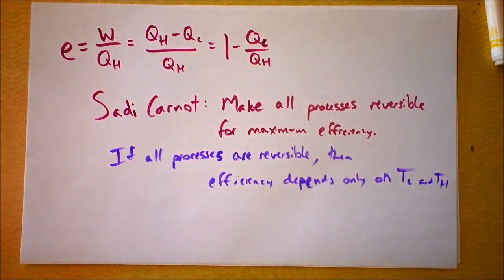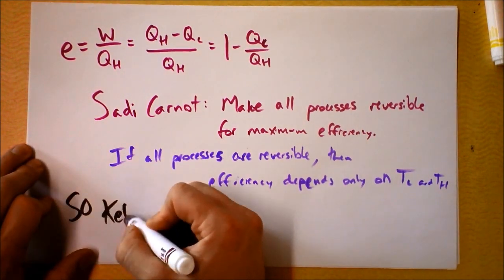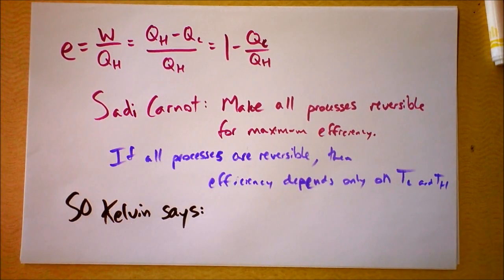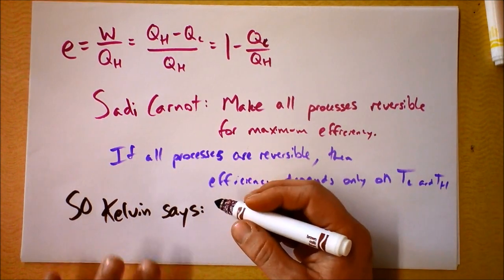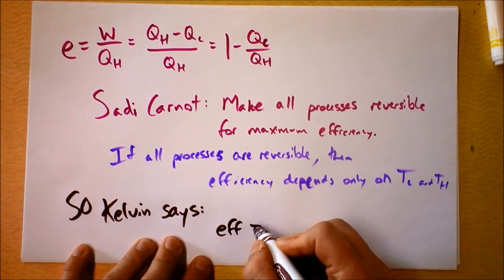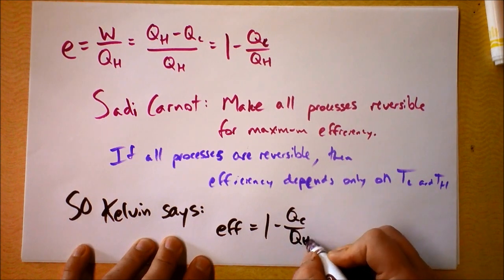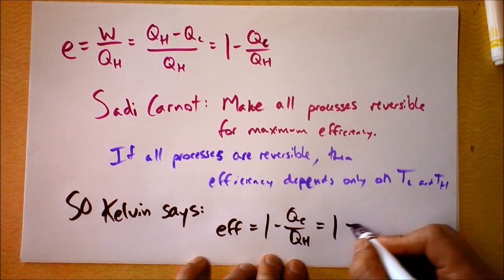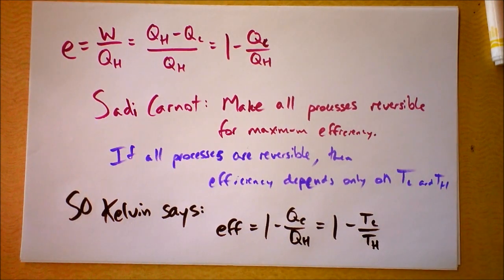Lord Kelvin was a serious thinker, and we've seen his name already. But Lord Kelvin said, hang on Carnot. If the efficiency depends only on the temperatures, and furthermore, the efficiency is 1 minus QC over QH, could we also say that's equal to 1 minus TC over TH? And it seemed that it was.